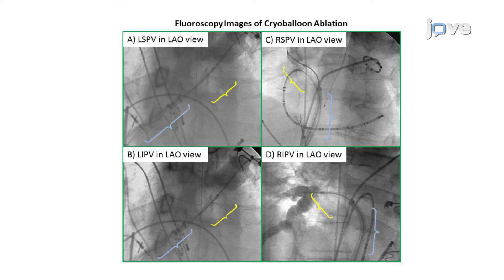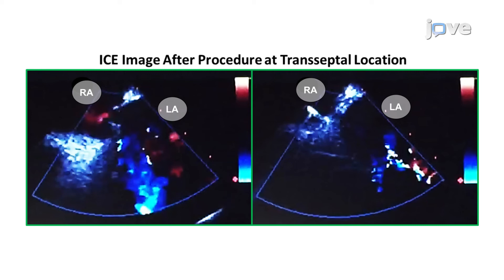Another acute advantage of using the IL location during a cryoballoon ablation procedure is that it is in a thicker part of the septum than the FO location. Consequently, when the cryoballoon and sheath are removed from the LA, there is less left-to-right shunting of blood compared to the FO location, and in some cases there is no detectable blood shunting when viewed by Color Flow Doppler imaging.